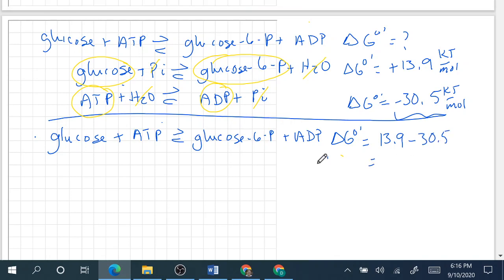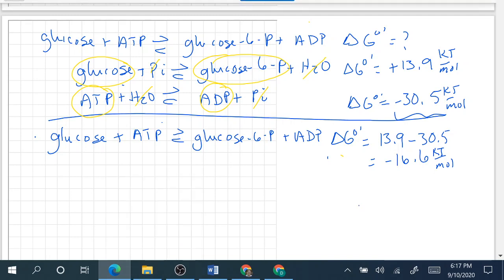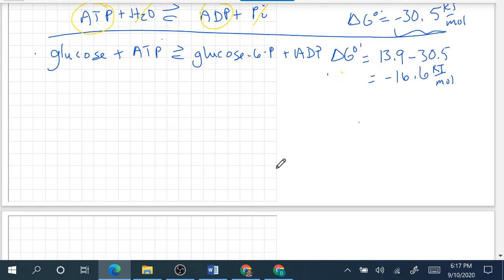Which is going to be equal to negative 16.6 kilojoules per mole. That is our delta G naught prime for the equation which we were asked to find.